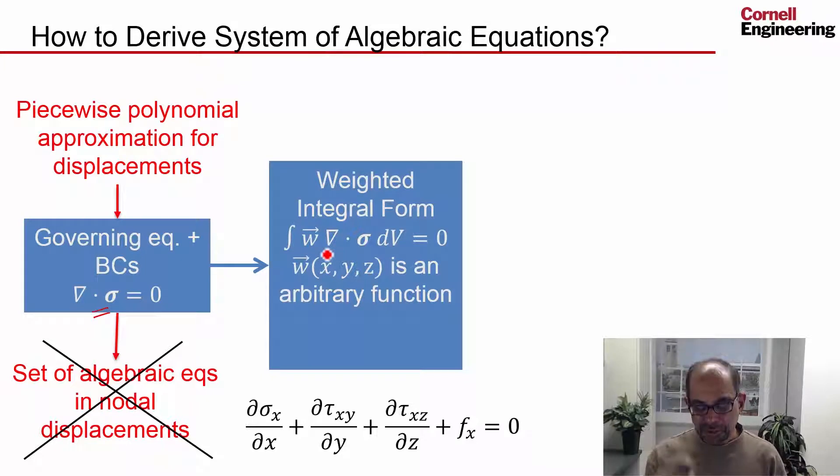Except that you have three weights now. For the X force balance in the X direction, you have a weight WX, and you multiply this by WX and then integrate over the domain. So it's going to be a volume integral. Similarly, you need a weighting function for the Y force balance and the Z force balance, which is why I've written this as a vector. It consists of these three functions.